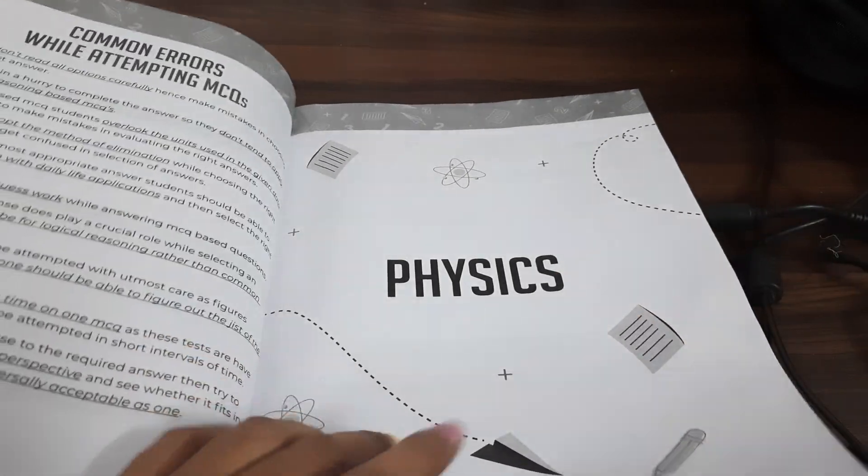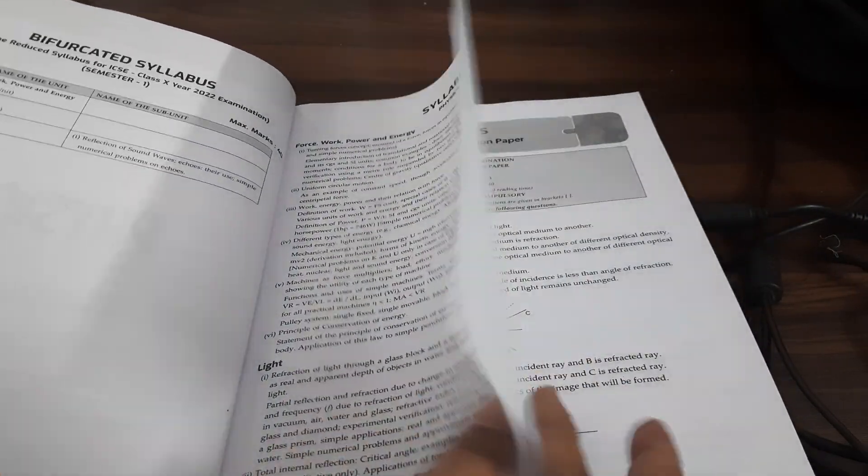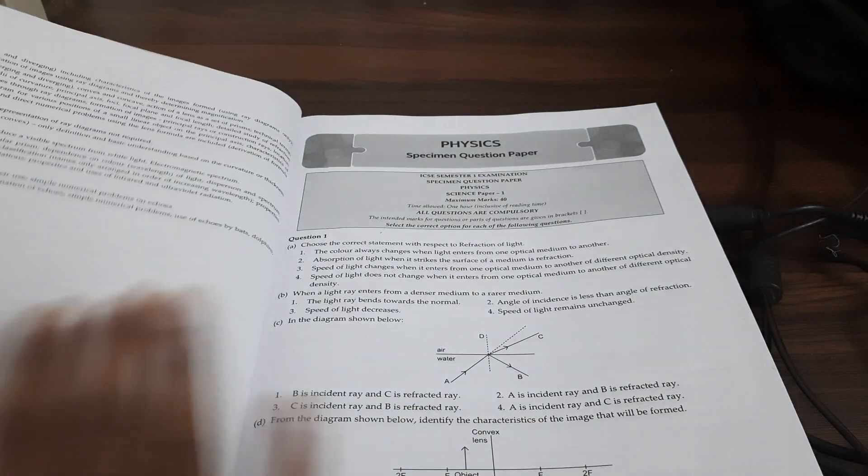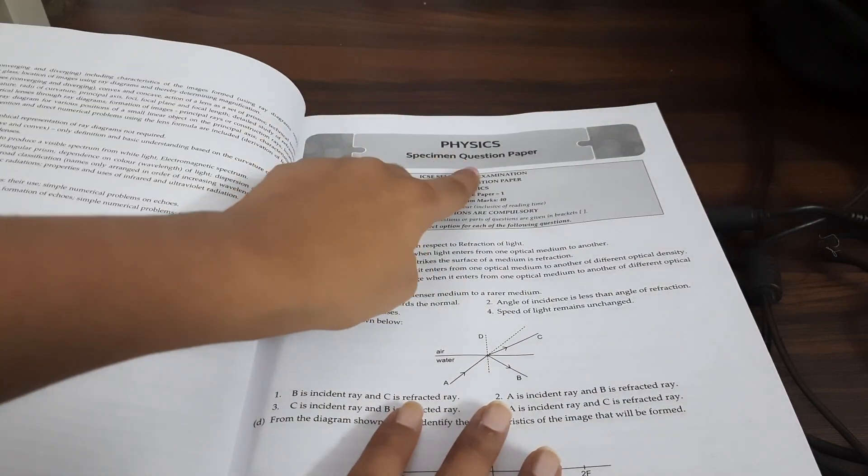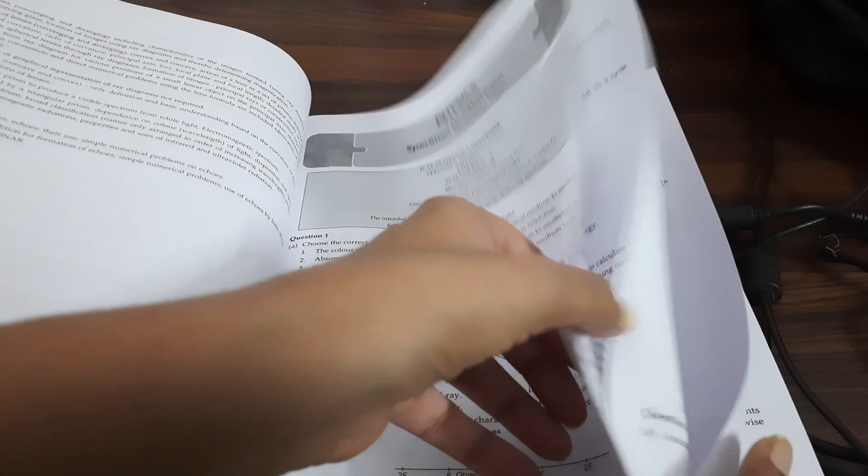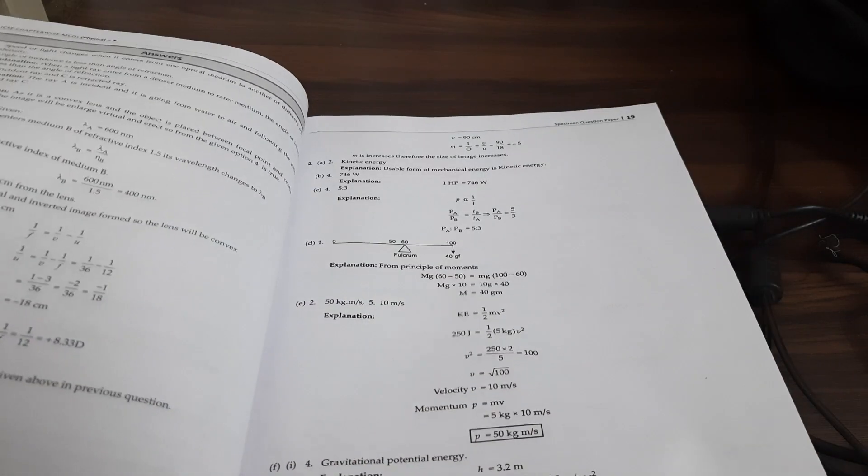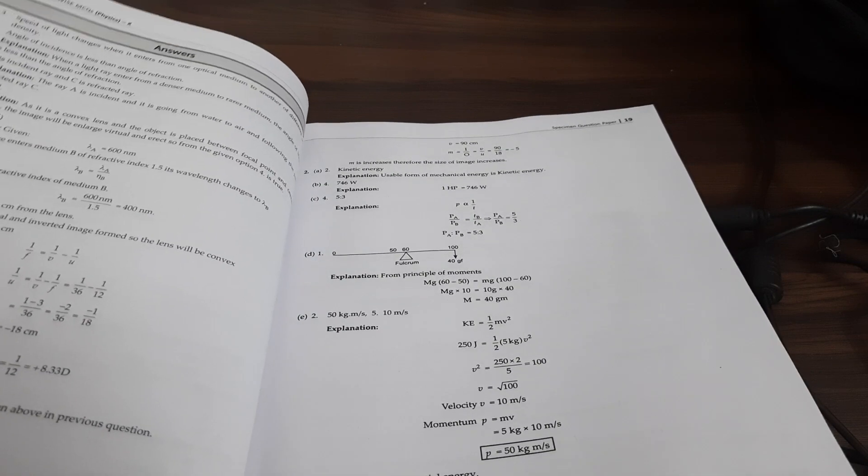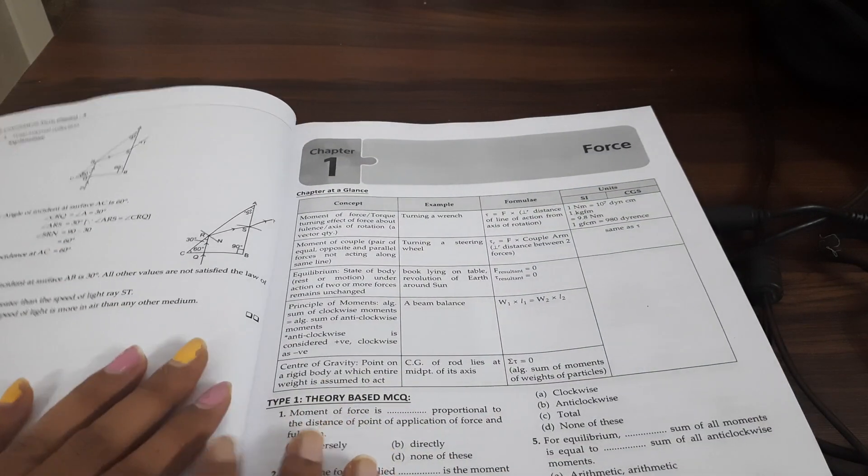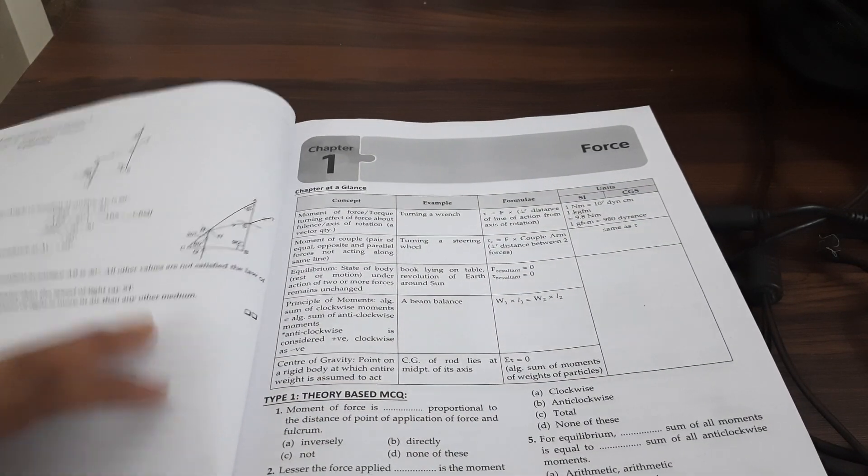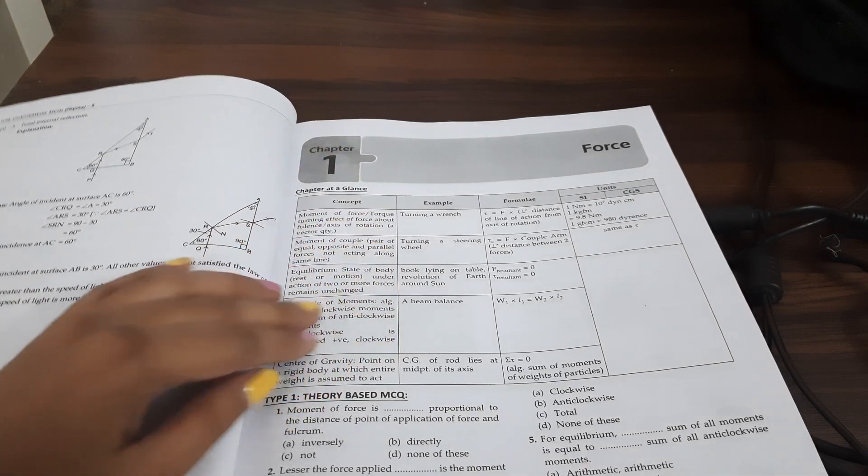For example, if we start with Physics, they have started with the syllabus. Then they have solved the specimen question paper which is there by board. They have solved the question paper along with the proper explanation and not just the answers. The explanation is given properly. Then suppose this is Chapter 1, Force. Initially they have given chapter at a glance.